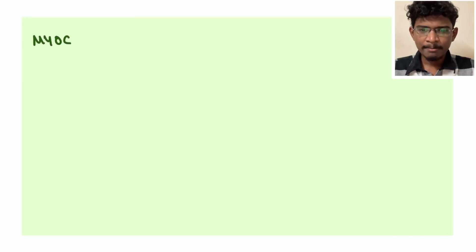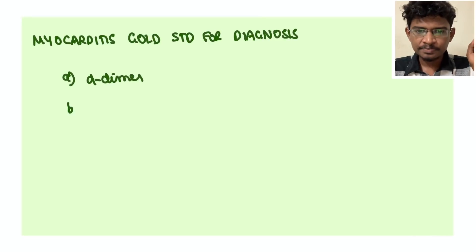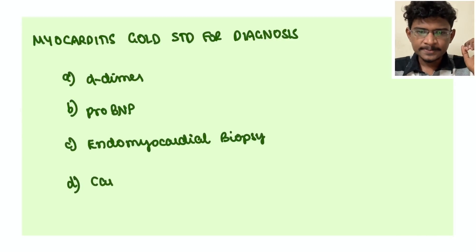So now do you understand neuromyelitis optica? Itis - inflammation, demyelination is going on where? It is going on myelitis - myelum means spinal cord - and optica means optic nerve. Myocarditis: gold standard for diagnosis - D-dimer, pro-BNP, cardiac MRI, and endomyocardial biopsy?